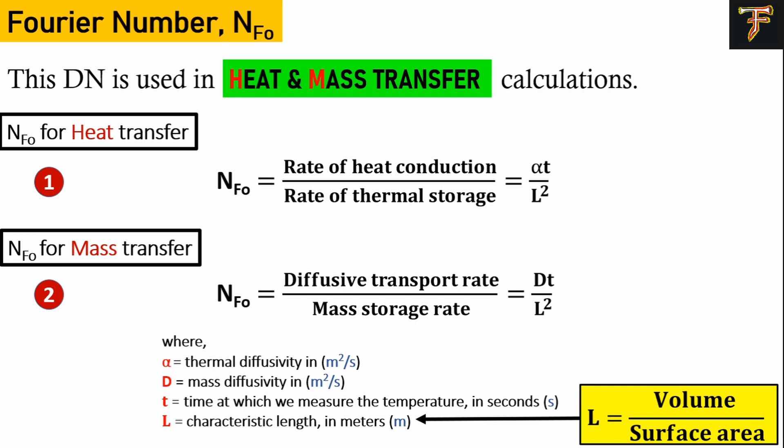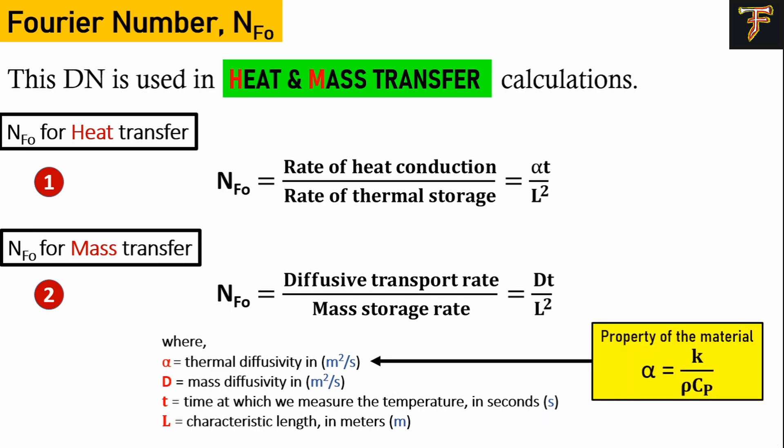Let's understand characteristic length - it equals volume per unit surface area. For a steel ball in ambient conditions, L equals volume (4/3πr³) divided by surface area (4πr²), giving you the characteristic length. Thermal diffusivity is a very important parameter, and I'll show you an example of how we can use it to understand the complete phenomena.